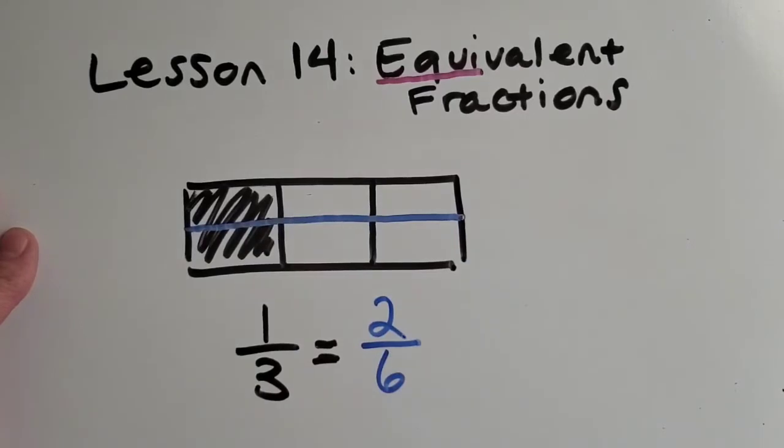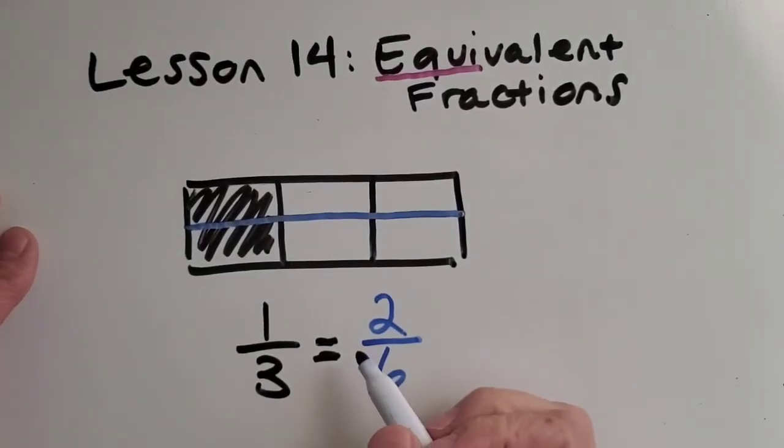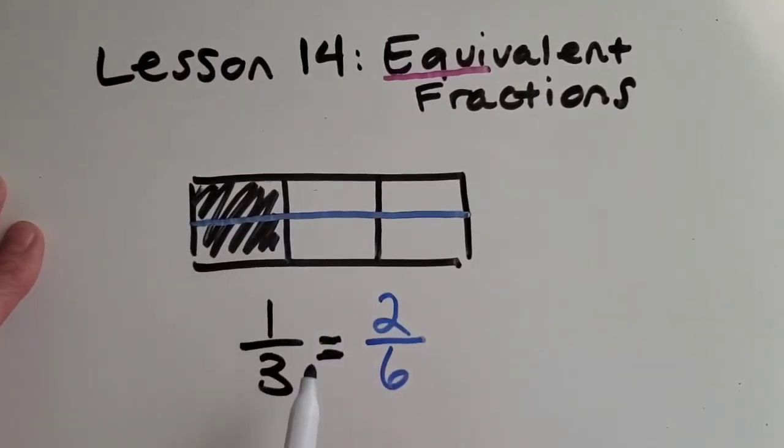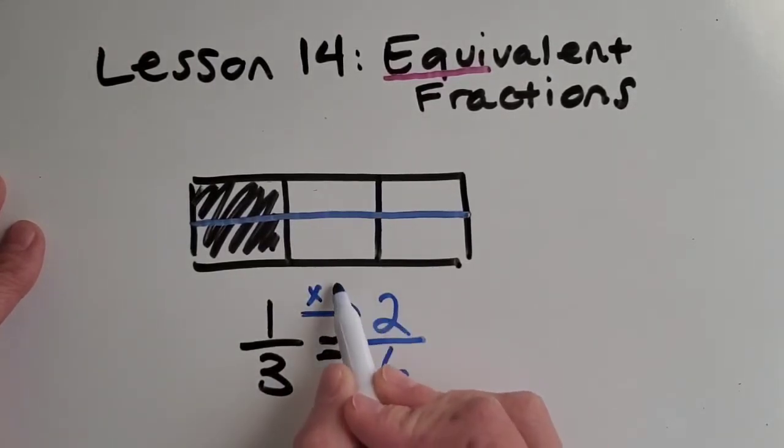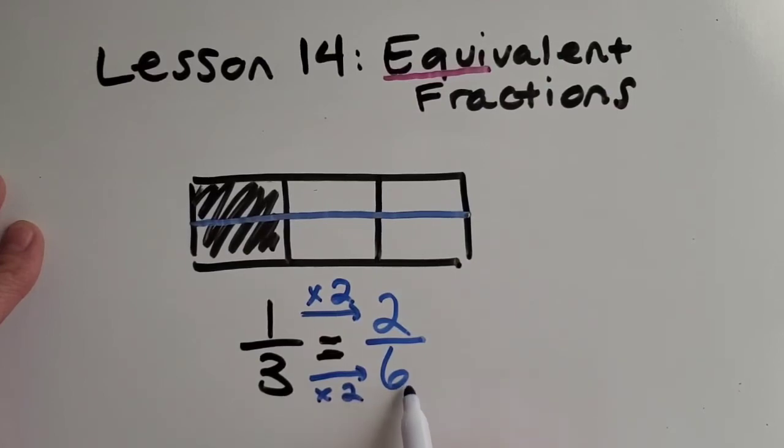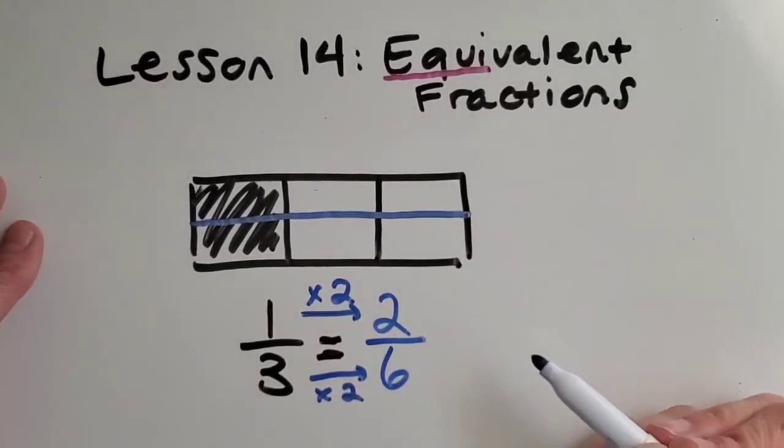So let's just double check because I know sometimes with pictures we might be kind of worried if we're correct or not. So let's check with a pattern just to see if it works. So one times what equals two? Oh, good, two. And so let's try the same thing to the bottom. Three times two is six. So that worked. The pattern works. The picture works. Perfect.